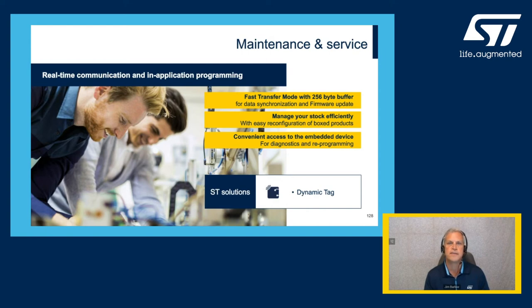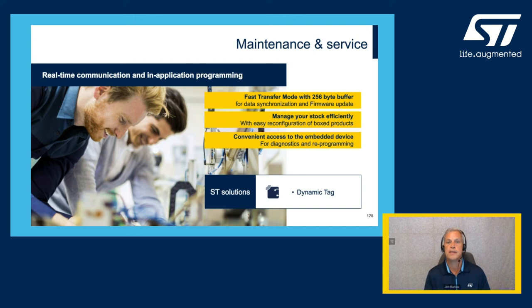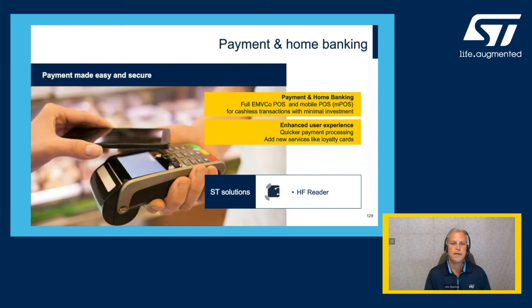A similar use case is a dynamic tag in the field. For example, an air conditioning service technician on a route taps a tablet on the unit to be serviced. He can see that last time it required a certain amount of Freon — possibly indicating a leak — or that it's time to change a belt. He then updates the results and moves on.